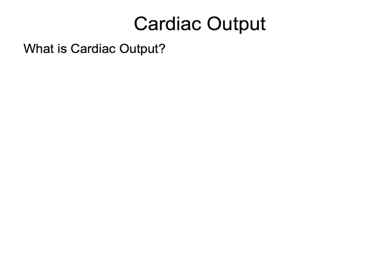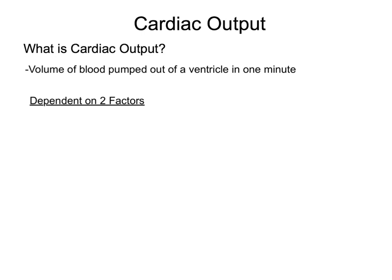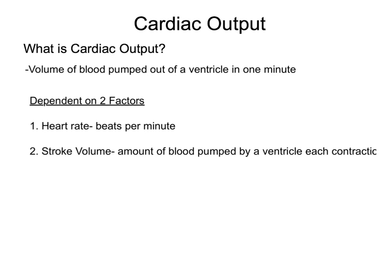The last topic of discussion for this lecture is cardiac output. Cardiac output is the volume of blood pumped out of a ventricle in one minute. It is dependent on two factors: heart rate, which is the beats per minute, and stroke volume, which is the amount of blood pumped by a ventricle each contraction. To determine the cardiac output of a heart, you simply multiply the heart rate times the stroke volume.